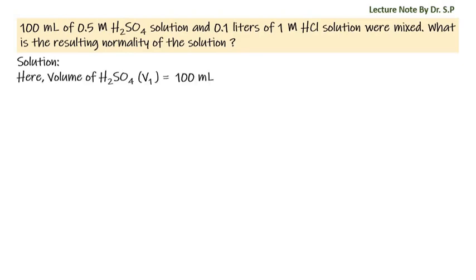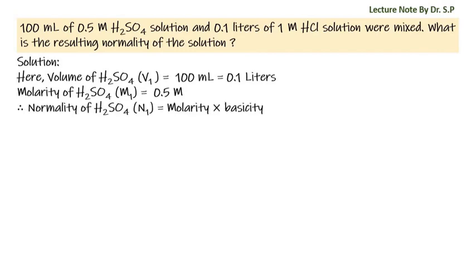Given: volume of sulfuric acid V1 is equal to 100 milliliters, that is equal to 0.1 liters. Given molarity of sulfuric acid M1 is equal to 0.5 molar. We have to convert molarity into normality. Therefore, normality of sulfuric acid N1 is equal to molarity into basicity, that is 0.5 into 2, since the basicity of sulfuric acid is 2.